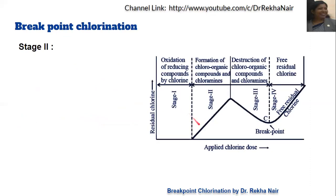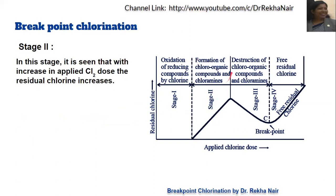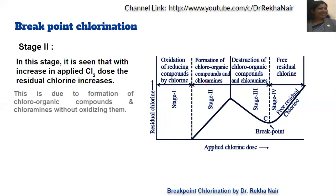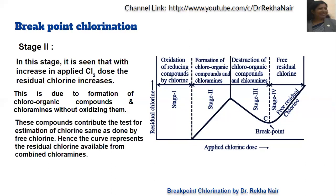In Stage 2, as we continue increasing the chlorine dose, there is formation of chloro-organic compounds and chloramines. The residual chlorine amount appears to increase continuously in Stage 2. This is because chlorine reacts with organic compounds and ammonia to form chloro-organic compounds and chloramines, and these compounds give a test result similar to that of chlorine, so it appears that residual chlorine is increasing.